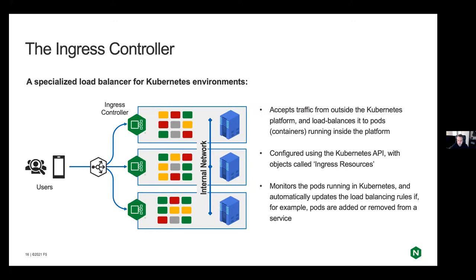The ingress controller uses something called an ingress resource to configure itself. It does a lot more than just load balancing — it can scale like other containers, monitor the status of your pods, do health checks, and TLS termination. It's essentially your layer 7 load balancer that brings external traffic into your cluster. There may also be another load balancer in front of the ingress controller, such as a DNS load balancer, a cloud TCP load balancer, or a BIG-IP if it's on-prem.